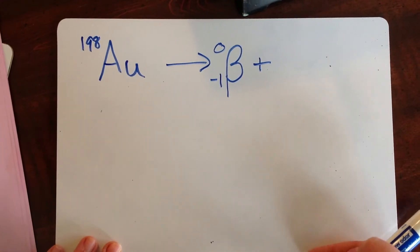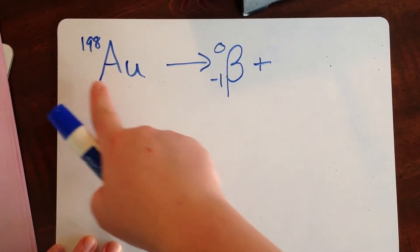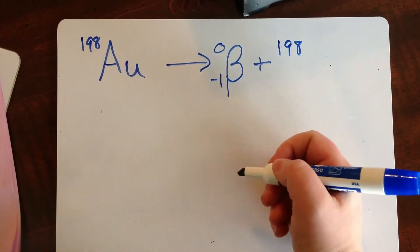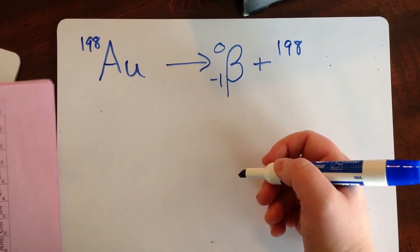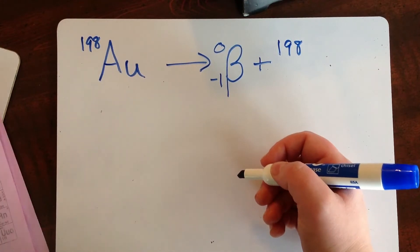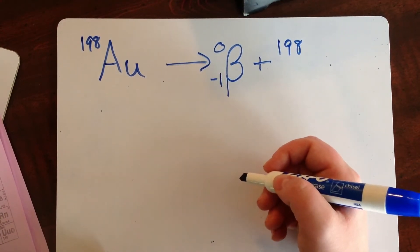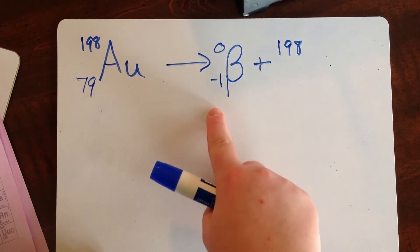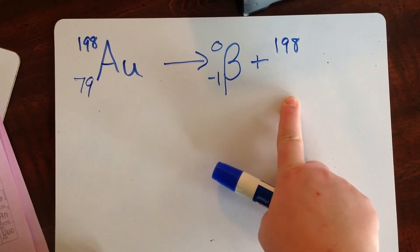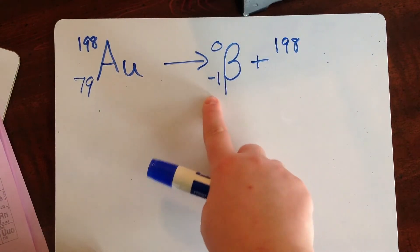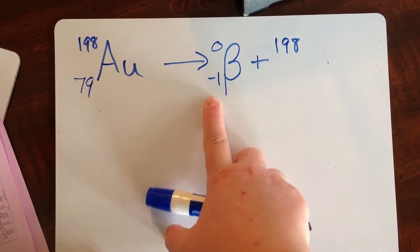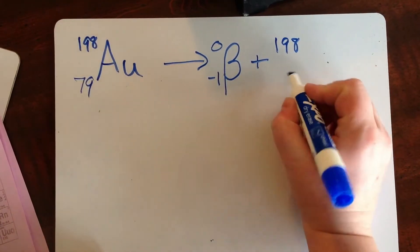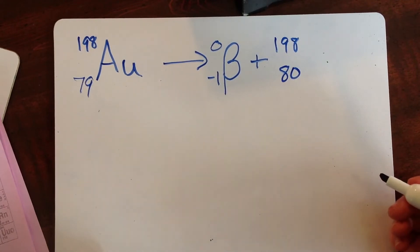And I'm going to do the same thing that I did with the alpha particle. 198 equals 0 plus 198. And then we're going to go to the periodic table and find the atomic number for gold, which is 79. And 79 equals negative 1 plus what? Be very careful with this. The negatives people tend to have a little bit of an issue with. I think just when they're working a little bit too quickly. Negative 1 plus 80 is equal to 79.